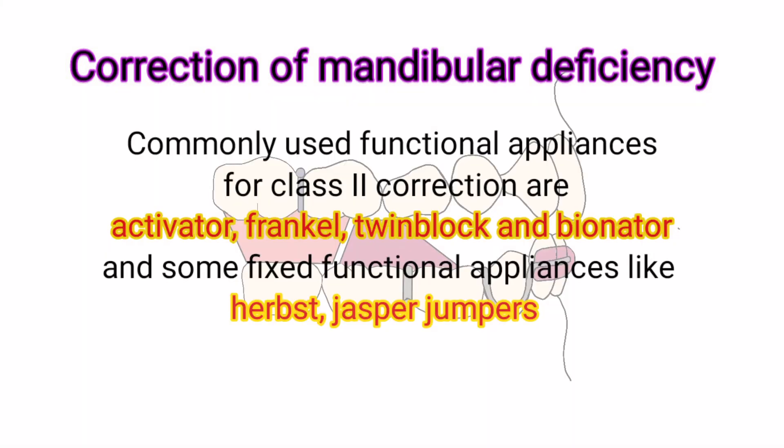Commonly used functional appliances for Class II correction are activator, Frankel, twin block, and Bionator. Some fixed functional appliances include Herbst and Jasper Jumpers.